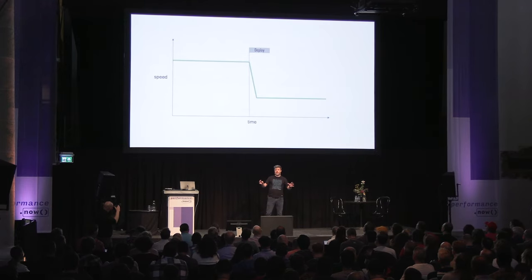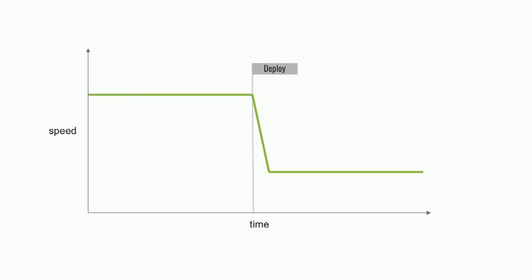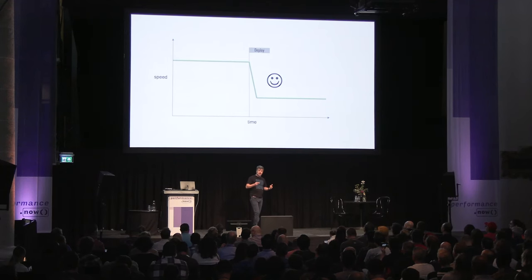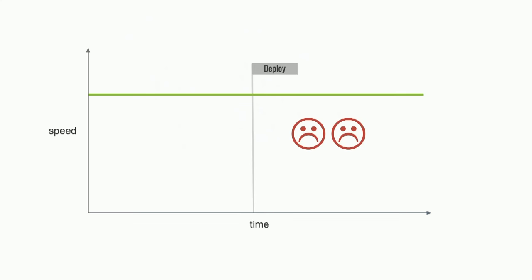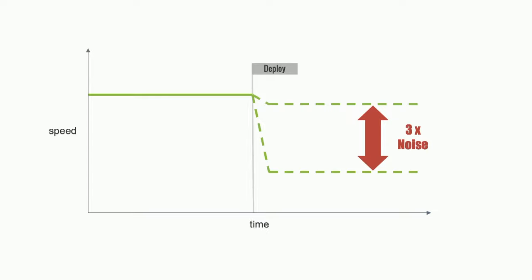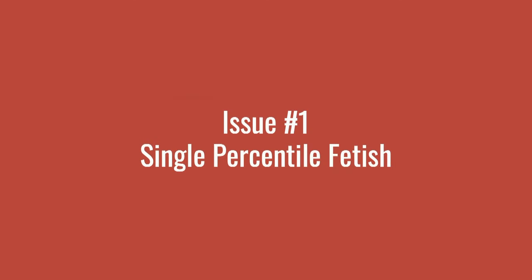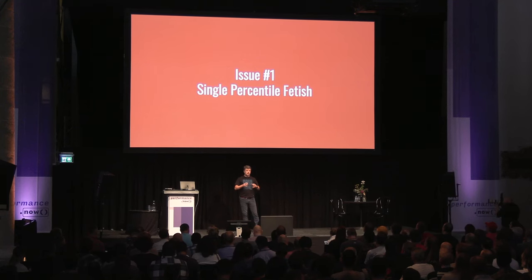If I show a graph like a nice clean improvement, everybody is basically happy. And if your graph looks like that, you don't need noise-canceling RUM. However, how often does it happen that you hope for a nice change and it's only marginal, or even no change at all? The reason is simple: there are three sources of noise which contribute to what you hope to get and what you actually get. Issue number one is we have this single percentile fetish.